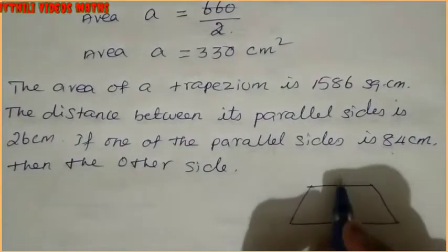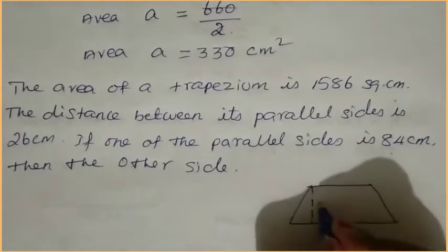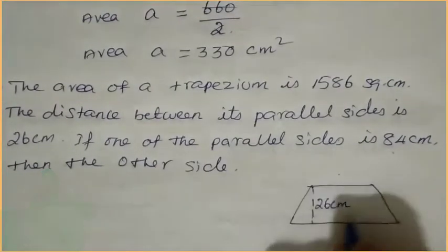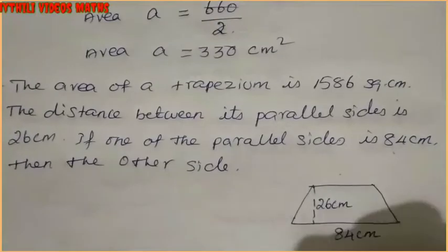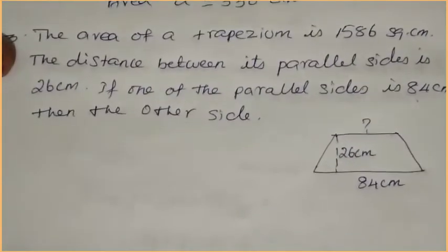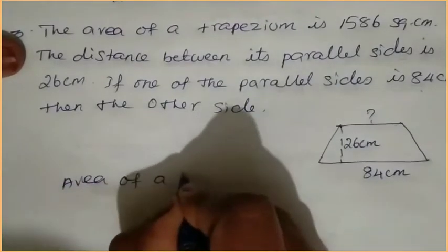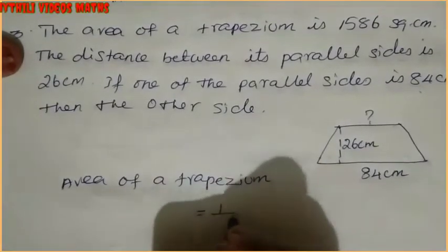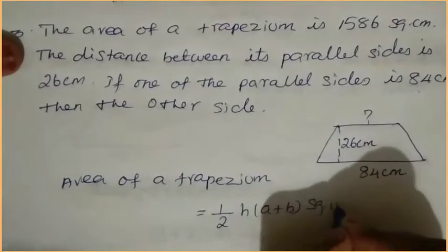The distance between the parallel sides is the height — this is 26 centimeters. One of the parallel sides is 84 centimeters, and the other parallel side — let's call it B — we have to find. We write the formula: area of a trapezium equals 1 by 2 × h × (a + b) square units.